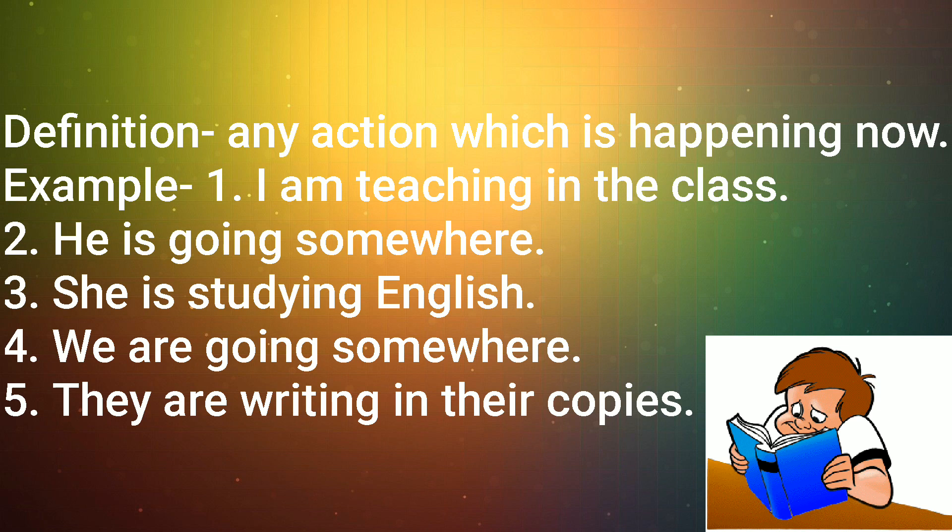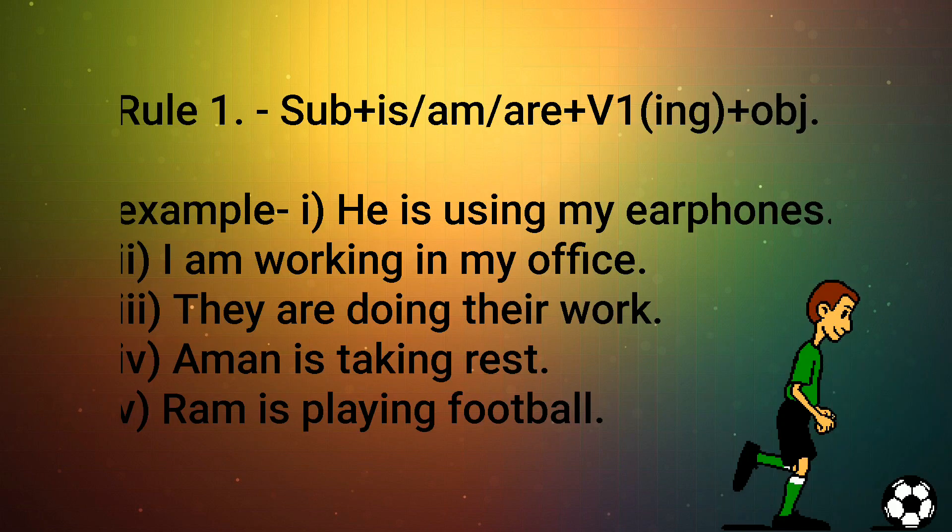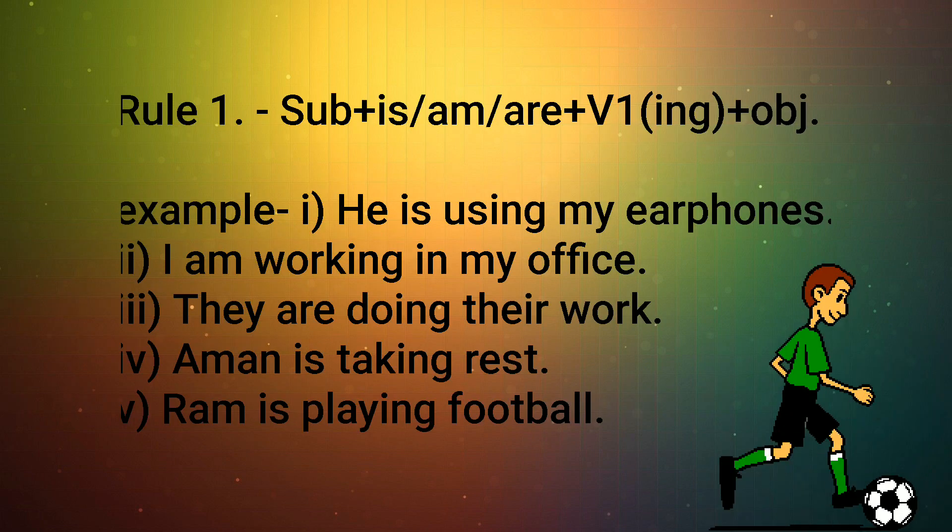Let's see the rules based on types of sentences. Rule number one says: subject plus is/am/are plus verb's first form along with -ing plus object. Now let's see some examples. He is using my earphones. I am working in my office. They are doing their work. Aman is taking rest. Ram is playing football. We will get to learn some examples after reading these examples. These activities are present here.